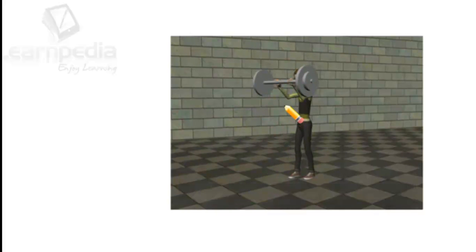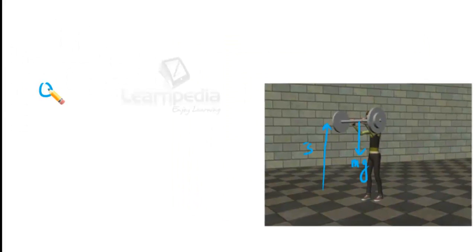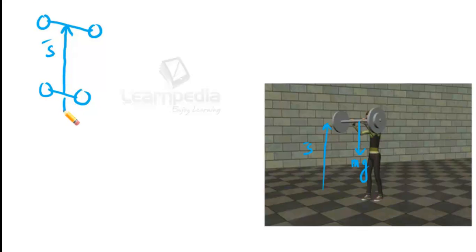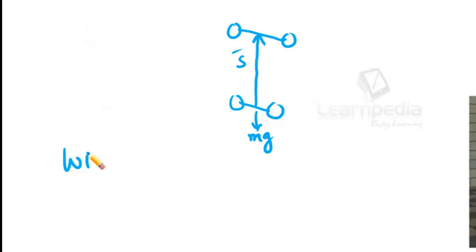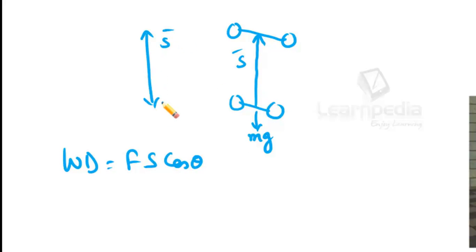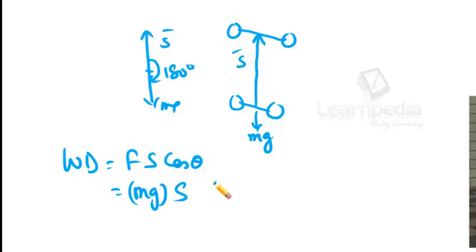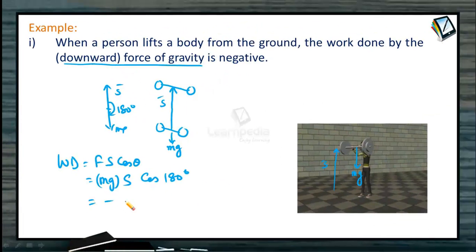He has applied a force in the upward direction, but the weight always experiences a force in the downward direction — that is the force of gravity. The displacement is from the ground upward. So work done equals F·s·cos θ. The angle between the displacement and Mg is exactly 180 degrees, so work done = Mg × s × cos 180° = −Mg·s. Work done here is negative.